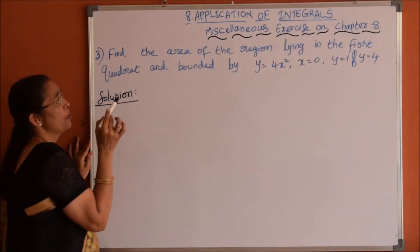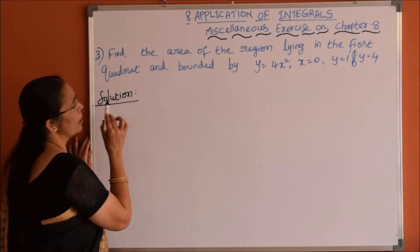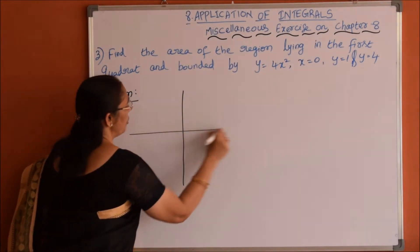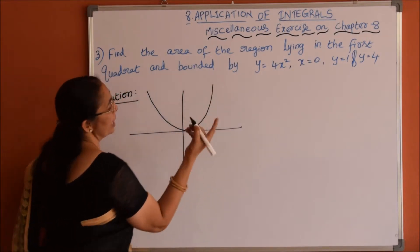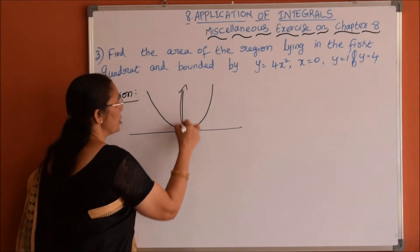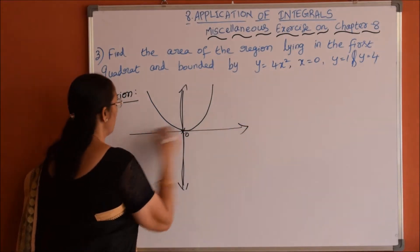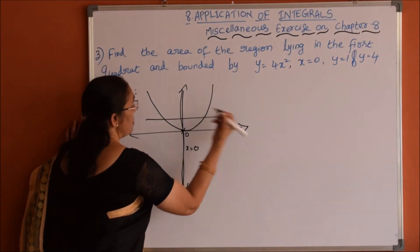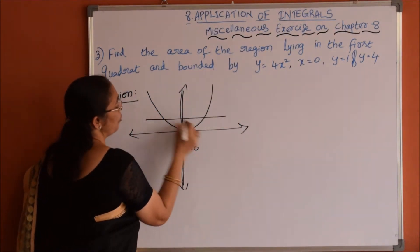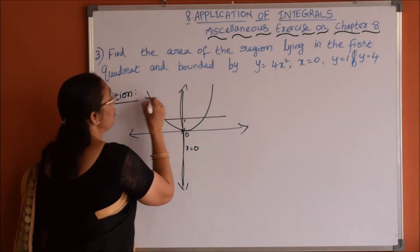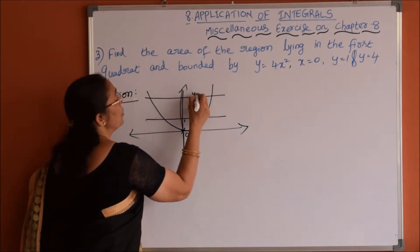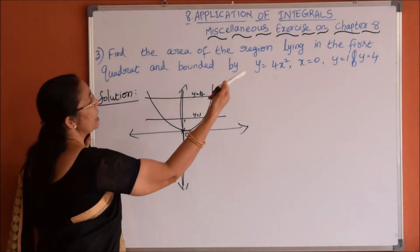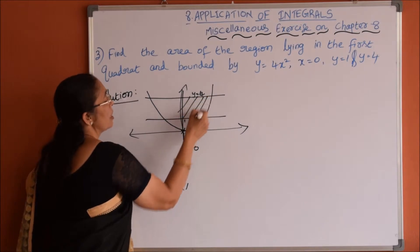Third problem: find the area of the region lying in the first quadrant and bounded by y=4x square, x=0, y=1, and y=4. y=4x square is the upward parabola, x=0 is the y-axis, y=1 is a line parallel to the x-axis at distance 1 unit, and y=4 is a line parallel to the x-axis. We need the area lying in the first quadrant between y=1 and y=4; this is our required area.